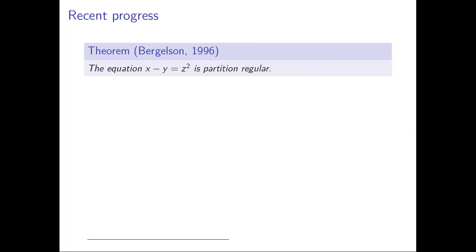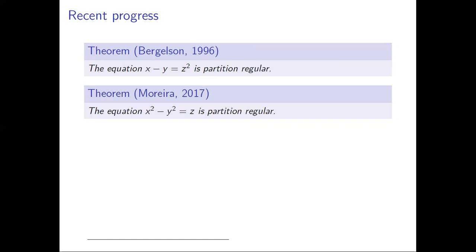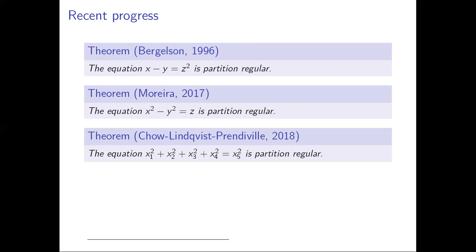Now I'll state a number of relatively recent results which are similar in appearance to the conjecture of Erdős and Graham but are not quite enough to solve it. If we linearize two of the variables, a result of Bergelson gives us partition regularity of x - y = z². Joel Moreira, in his work on monochromatic sums and products, proved that the equation where we linearize z and keep x and y as squares is partition regular. And Chow, Lindqvist, and Prendiville showed that the generalized Pythagorean equation with extra variables is partition regular — specifically, sum of x_i² = y² is partition regular provided you have at least five variables in total.